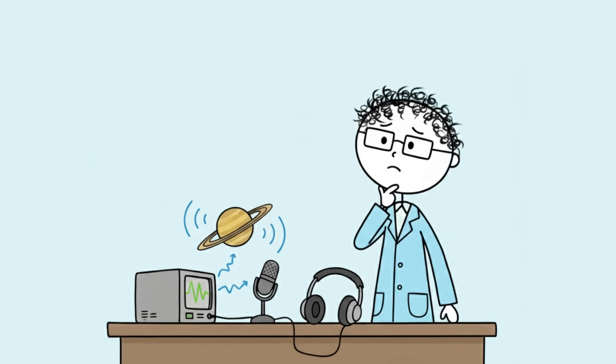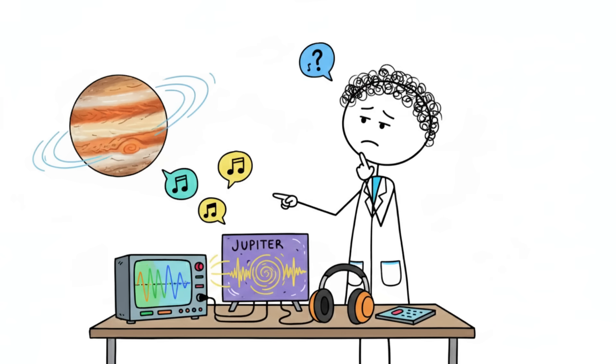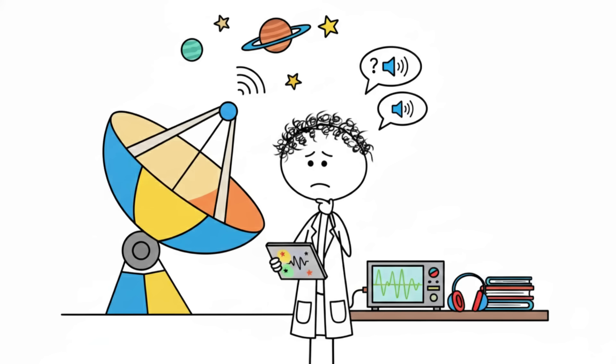The creepiest part is that these radio emissions are constant. While you're sitting there eating a bagel, Jupiter is emitting a low-frequency roar that sounds like a storm at sea recorded through a radiator. Your brain is hardwired to find patterns in noise, so listening to these space sounds for too long will have you convinced the gas giants are whispering state secrets or judging your browser history.